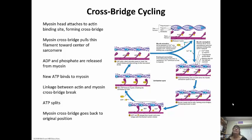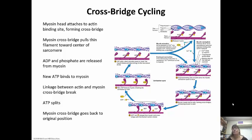Calcium is needed because calcium has to bind to troponin so that tropomyosin can get pulled out of the way. ATP is needed for every power stroke — ATP binds to the myosin for the power stroke and then it's going to be released, so a new one has to come in for the next power stroke.